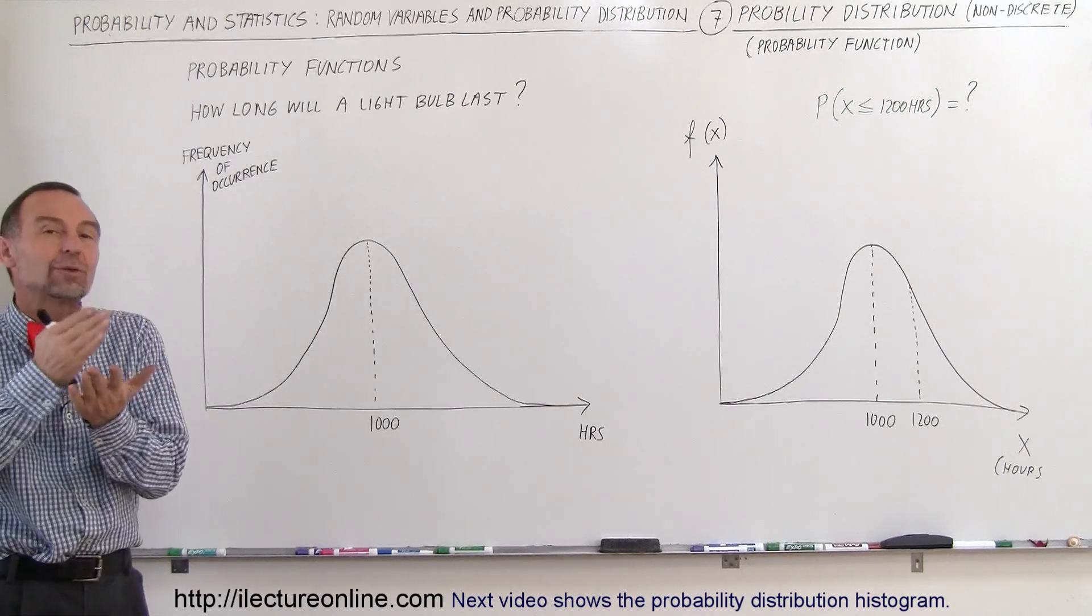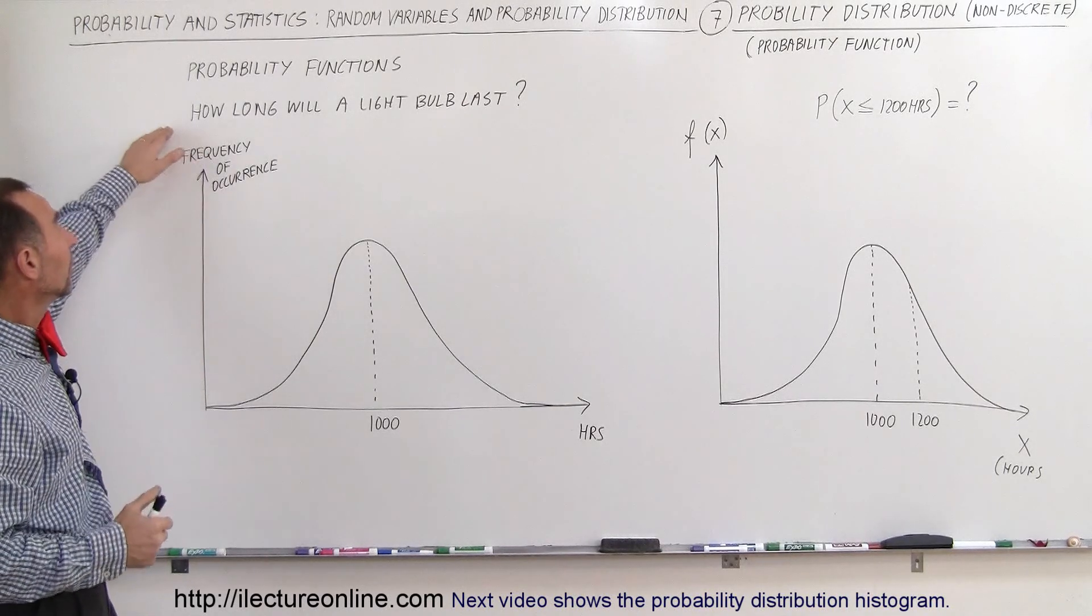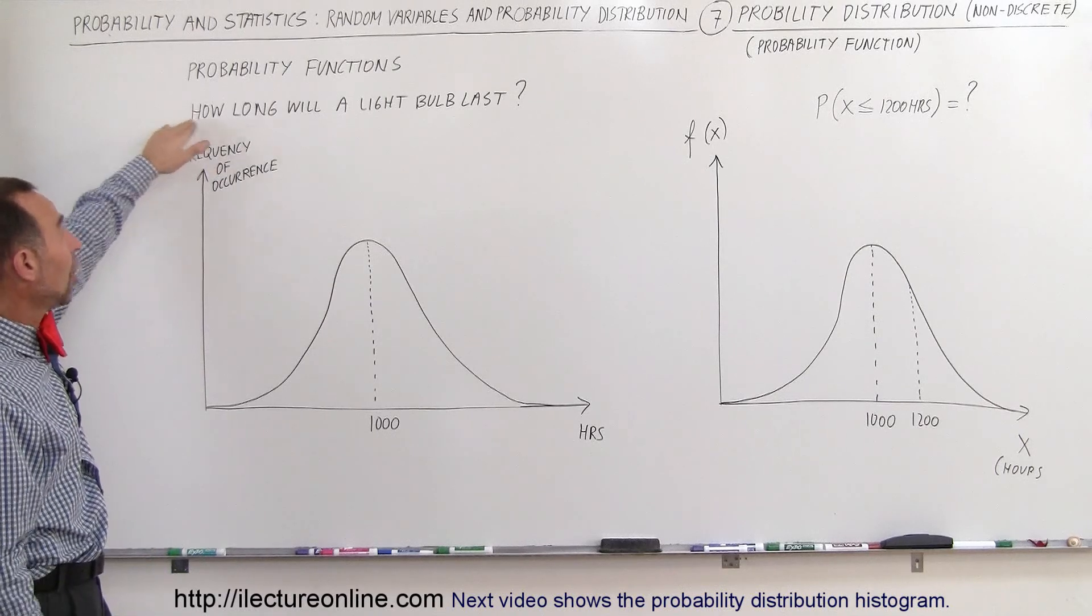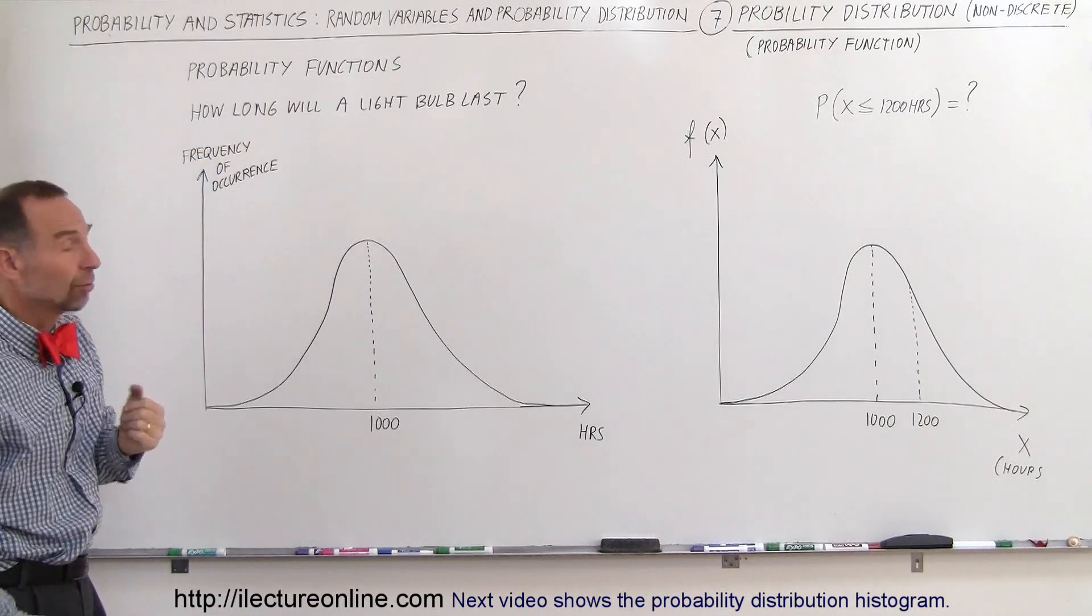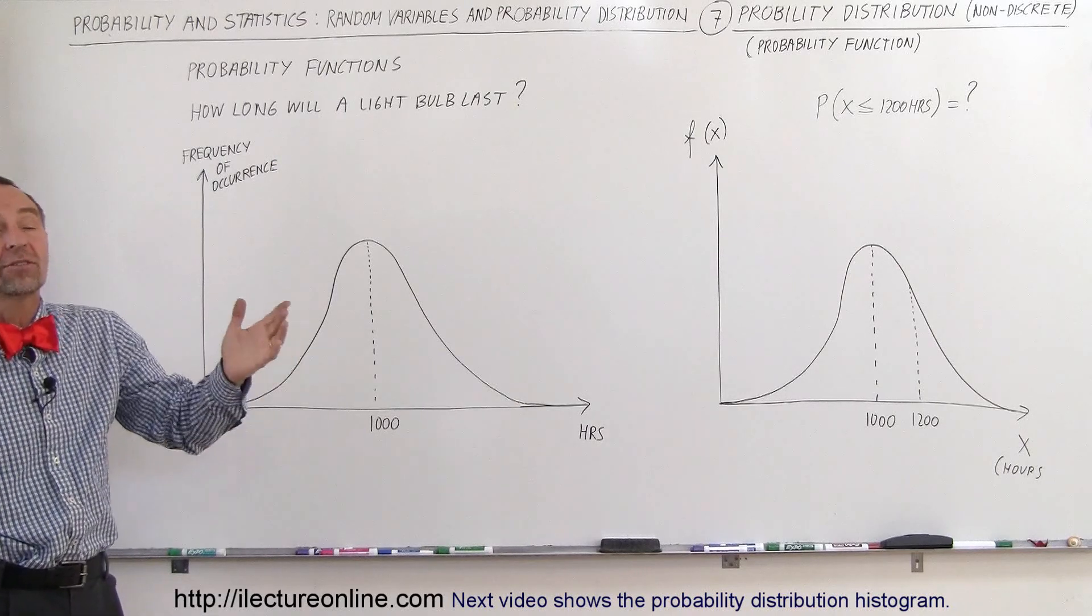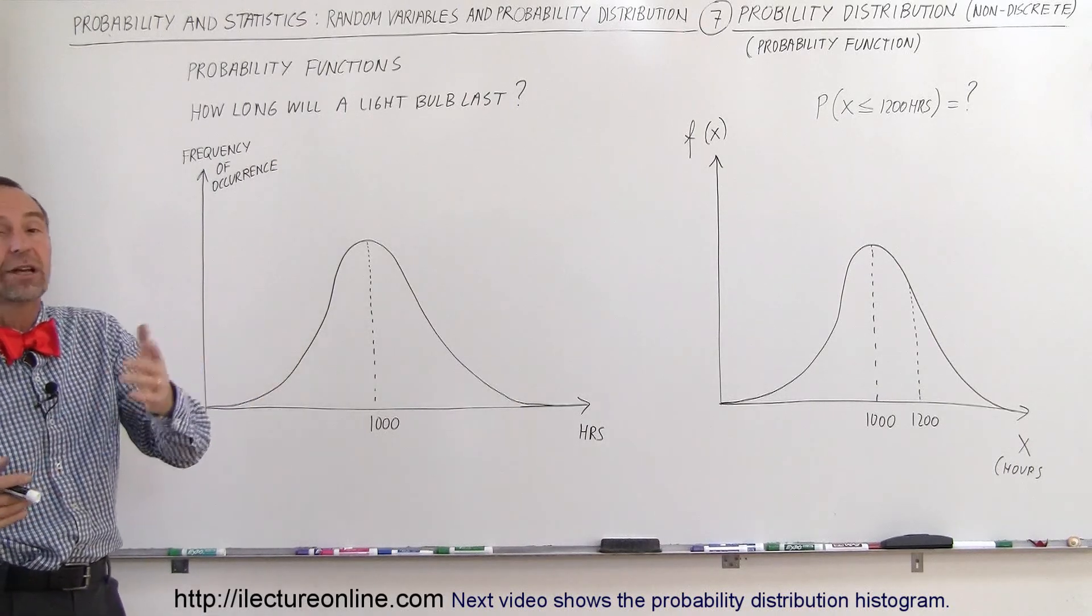In other words we can have a discrete value. For example, let's say we ask the question how long will a light bulb last? Well, it can last a thousand hours and five seconds, a thousand hours and three point four seconds.